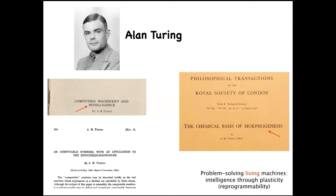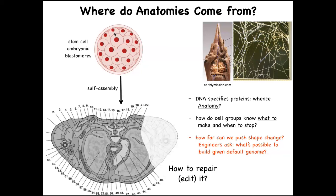We all start life as embryonic blastomeres. Look at the incredible order in a cross-section through the human torso — all complex parts in the right place. Where does this pattern come from? You might say DNA, but the spatial structure is not explicitly in the genome — any more than the shape of a termite mound or spider web is in the genome. It's an emergent feature of the physiology and behavior of cells.